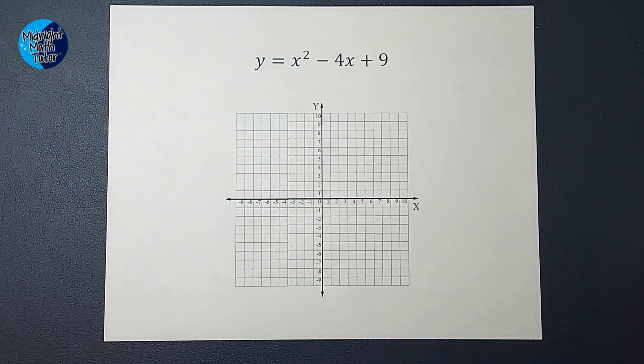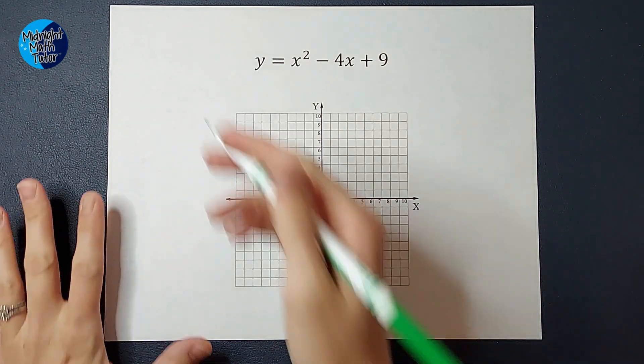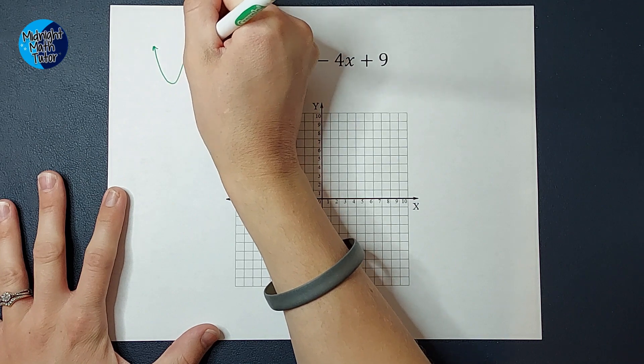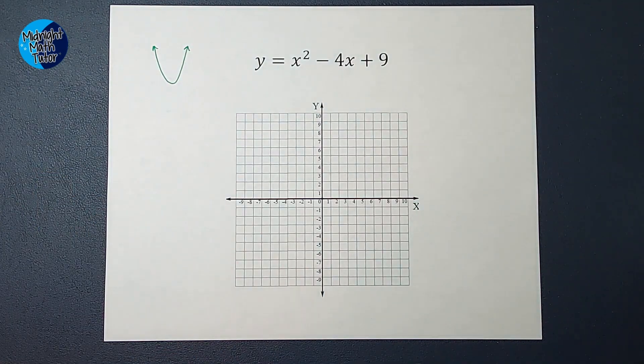You can either graph it in standard form, or you can convert it to vertex form and graph it. In this one, we're going to stay in standard. If you want to see an example where I convert it to vertex form, I'll link that in the corner. But let's go ahead and do this in standard form. When I am graphing a parabola, they look a little something like this. That's what a parabola looks like.